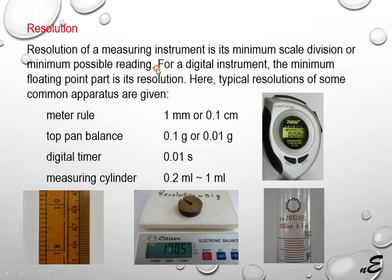For a digital instrument, the minimum floating point part is its resolution. Here these two devices are digital: an electronic digital timer and a digital mass balance. The timer is correct to 2 decimal places — reading 2.03 seconds — so its resolution is 0.01 second. The balance is correct to 1 decimal place, so its resolution is 0.1 gram.